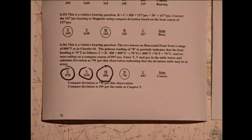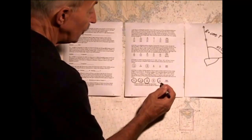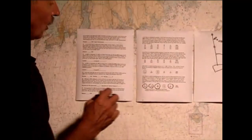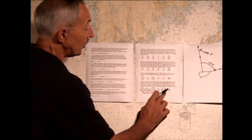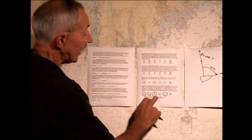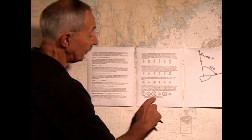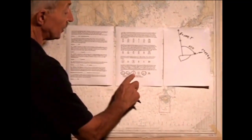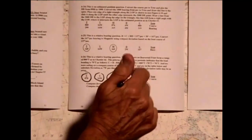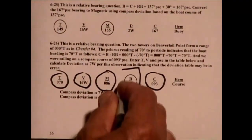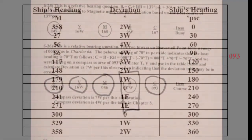Now the compass — we said in the problem statement that the boat was on a course of 093 PSC. So 093 PSC is what we have here. What does the deviation then have to be to make 086 and 093 agree? Well, it has to be an addition going from left to right of 7 degrees west — 86 and 7 equals 093. So the deviation based on this observation is 7 degrees west.